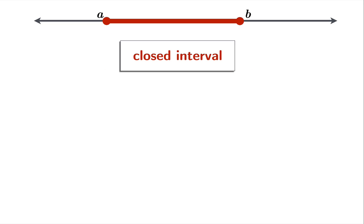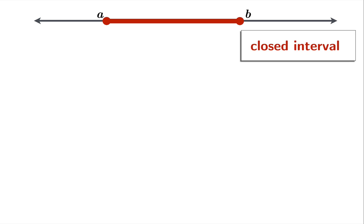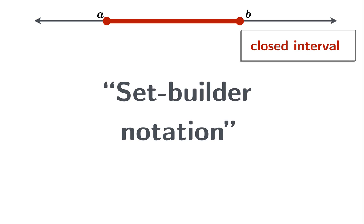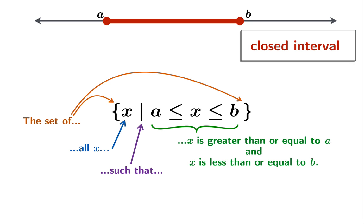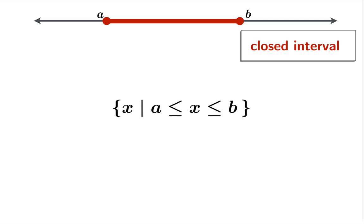This interval is what we call a closed interval. We could use notation to describe this interval. Set builder notation is very elaborate, very specific, and can be used in many situations besides writing intervals. We use curly braces to mean the set of all x such that—the vertical line indicates "such that"—and then there's this condition, which in this case is x is greater than or equal to A and less than or equal to B. So there's our set builder notation for this closed interval.